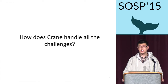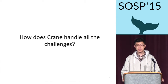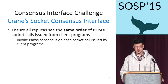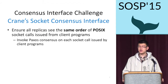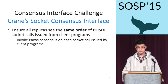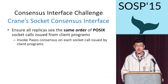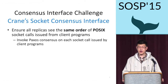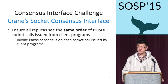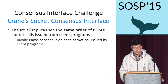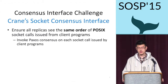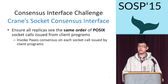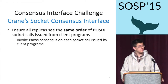Here I'd like to talk about the key challenges that Crane faces to make SMR transparent. The first challenge is making a transparent state machine replication consensus interface. Using existing SMR systems requires developers to shoehorn their implementation into those interfaces, which can be time-consuming and error-prone. To address this challenge, Crane creates a socket-level consensus interface compatible with the standard POSIX socket APIs, which are used by many general server programs. Crane's Paxos consensus protocol ensures that all replicas see the same order of socket calls issued by the clients.